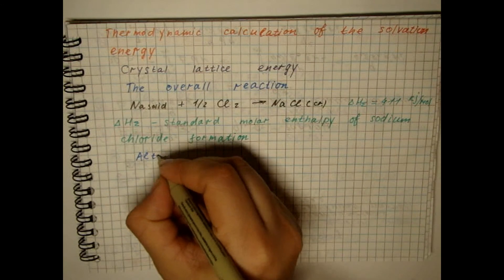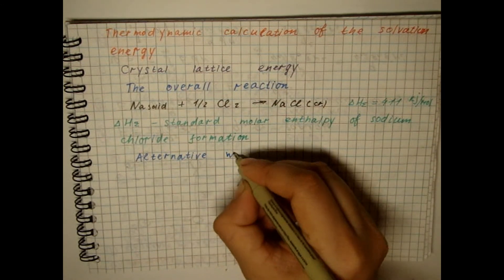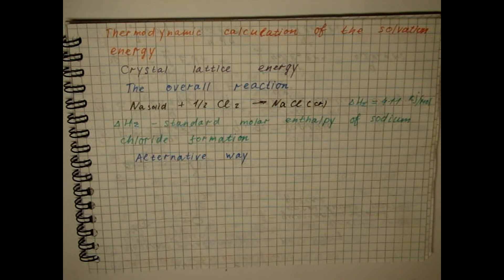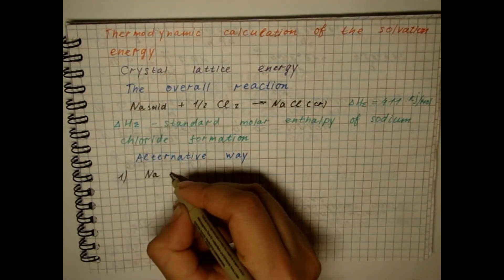An alternative way is divided into five stages, one of which is the formation of a crystal lattice from its constituent ions in their gaseous state. The first process will be the atomization or sublimation of sodium.